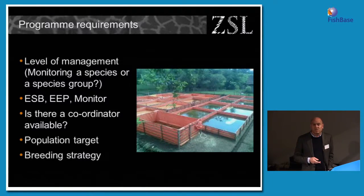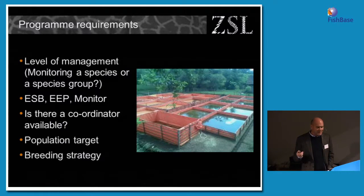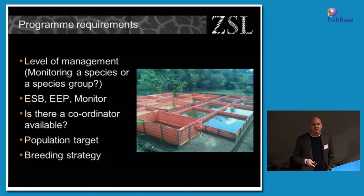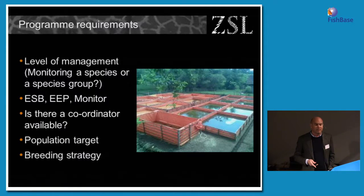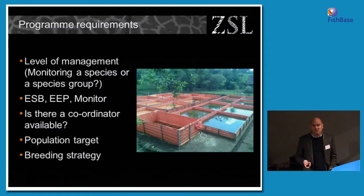The program has its own requirements. What level of management do we want for the species — monitoring an individual species with one coordinator, or letting one person coordinate a whole species group? Within EAZA there are different levels of management: ESBs involve a stud book; EEPs are a very high level of international management, primarily used for big mammals like tigers and incredibly complicated and expensive to run. There's also a third category — monitoring programs that don't involve stud book and genetic management, but just involve a person keeping tabs on what's happening within populations across Europe. Do we have a coordinator available? We're dealing with hundreds of species. What is our population target and for how many years? And do we have a breeding strategy?